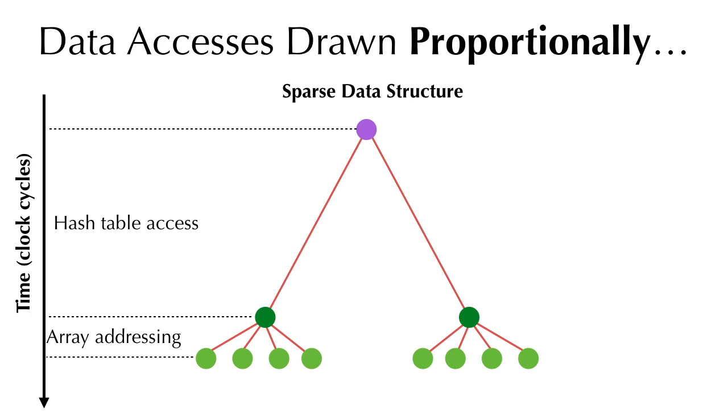In order to provide sparsity, a programmer may use a two-level sparse data structure. Let's say we have a hash table of dense arrays. Accessing a voxel here means first traveling down from the hash table, followed by an array addressing.